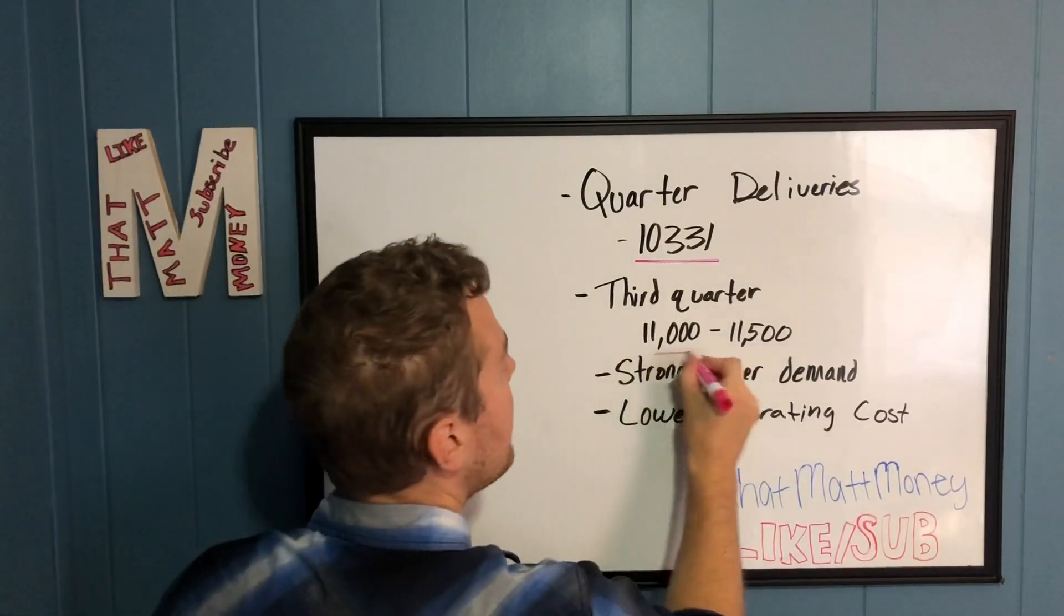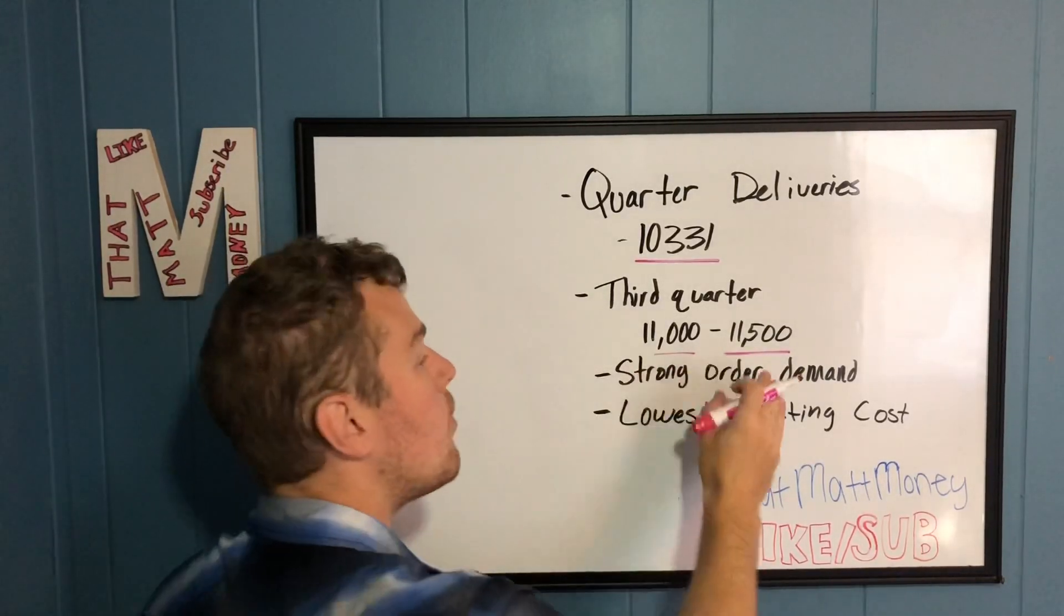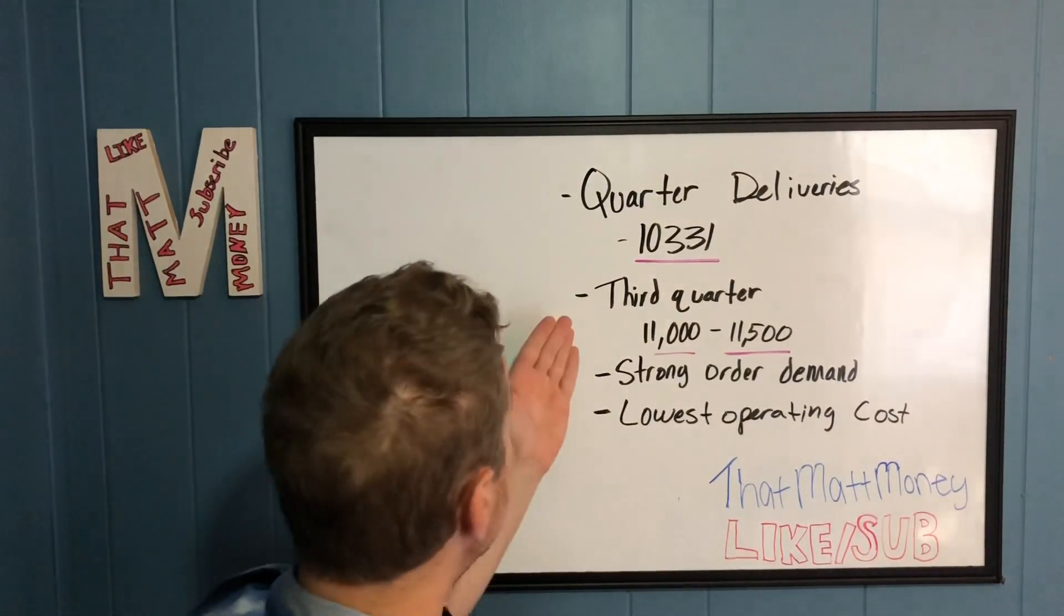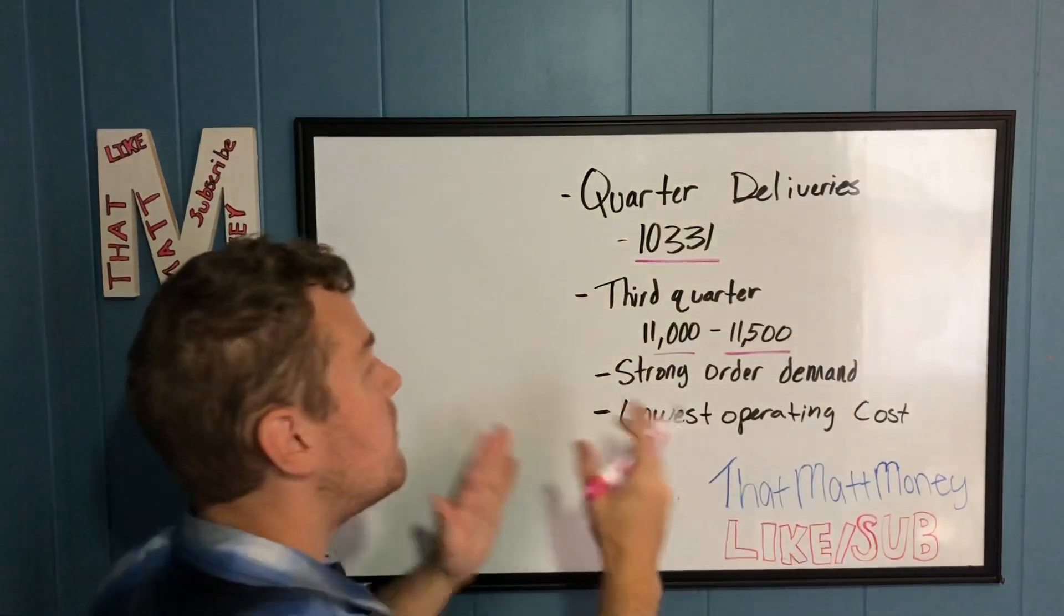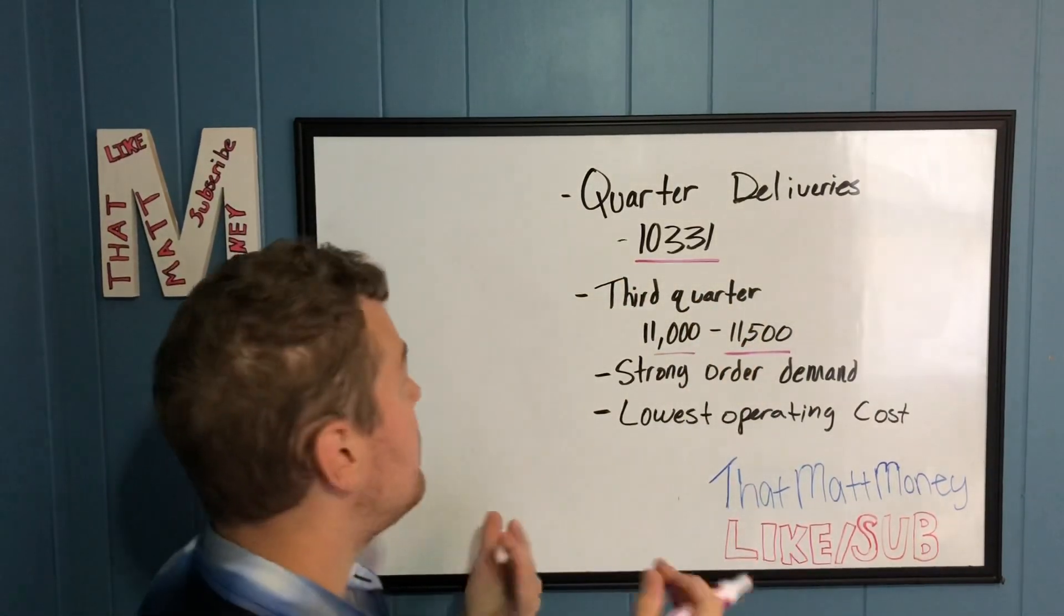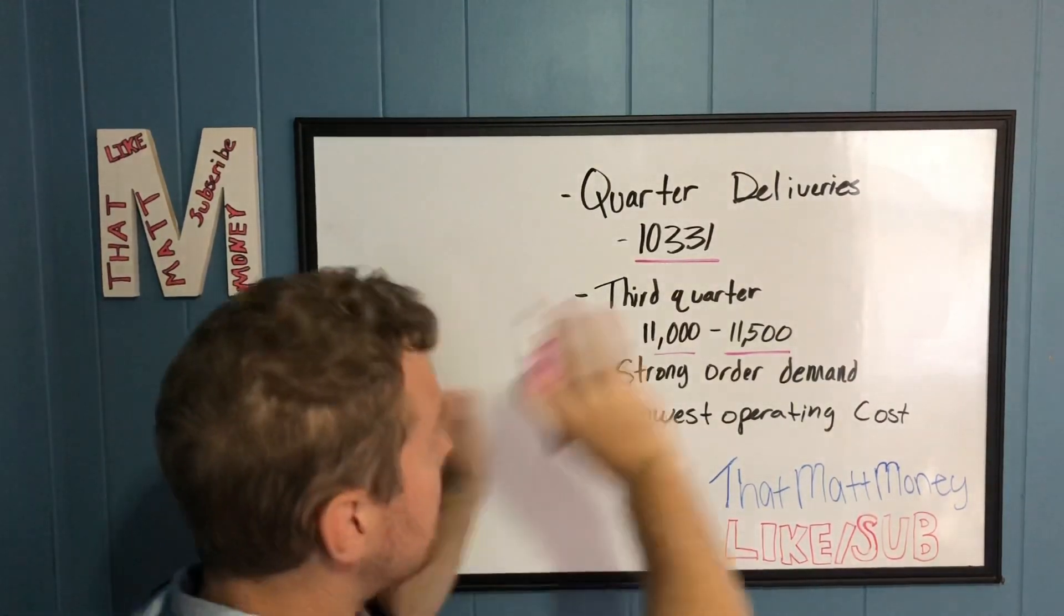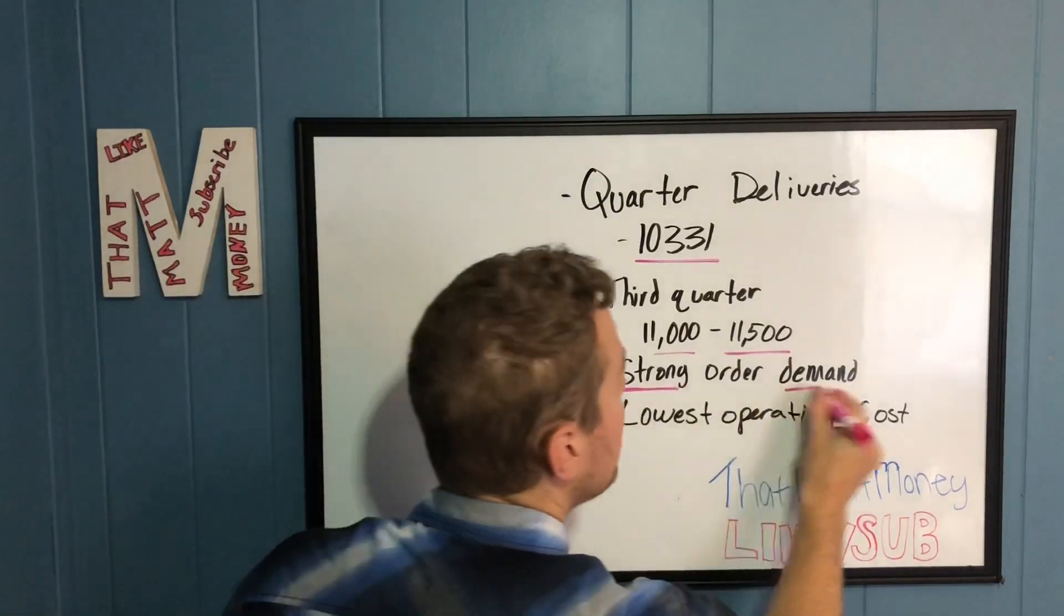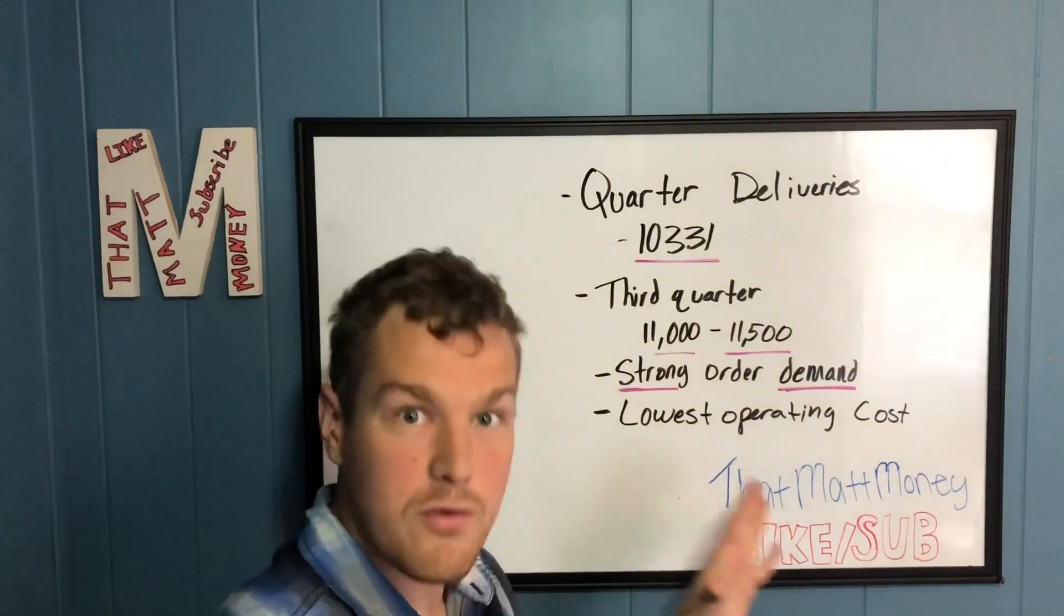Third quarter they are expecting 11,000 to 11,500 vehicles which is great. That means there's strong order demand right now. People are wanting to go out there and purchase these vehicles. We can imagine third quarter is going to be even better than this quarter and it's just going to keep getting better and better. With more vehicle demand that's going to propel us hopefully towards profitability. They're adding that new model vehicle as well, so hopefully that will also help push us towards profitability. There's strong order demand which is great.